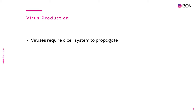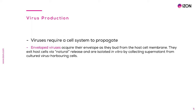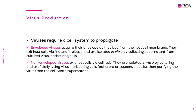As mentioned earlier, viruses require a cellular host to replicate; therefore their production requires the use of cell culture systems, and this depends on the virus type. Enveloped viruses acquire their envelope as they bud off from the host cell membrane; they exit host cells via natural release and are isolated in vitro by collecting the supernatant from virus-harbouring cultured cells. Most non-enveloped viruses exit their hosts via cell lysis; they are isolated in vitro by culturing and lysing virus-harbouring cells, which may be adherent or in suspension, after which the virus can be purified from the cell lysate supernatant.